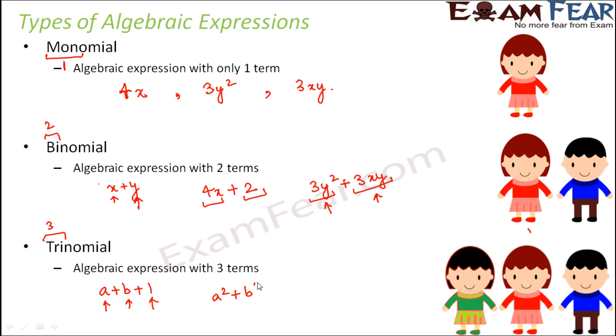Similarly, if you have a squared plus b squared plus 3ab. So how many terms do you have? 1, 2 and 3. So this is a trinomial.